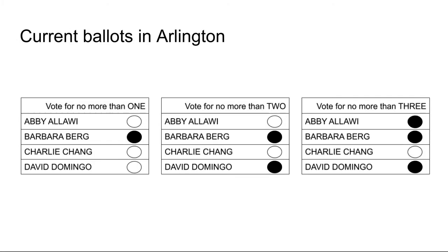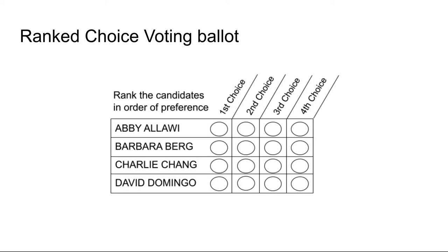Here are the kinds of ballots we see in Arlington elections today. Depending on the number of seats we're filling, we may be asked to vote for up to one, two, or three. Our proposal would replace them all with a ranked ballot, where voters can pick just one, or if they want, mark a second choice in the second column, a third choice in the third column — as many or as few choices as they like. And it doesn't matter how many seats we are electing — one, two, or three — the ballot and the instructions are the same.